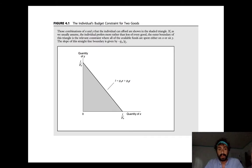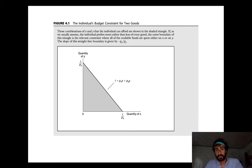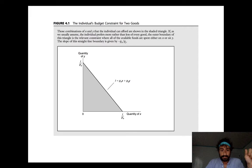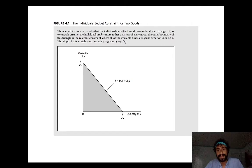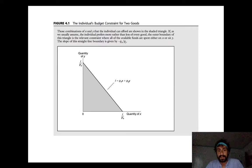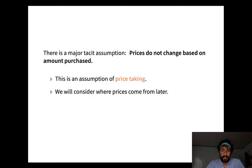Given constant prices, here's what a budget set looks like. On the y-axis, you can buy I divided by p_y worth of y if that's all you buy. On the x-axis, you can buy I divided by p_x of x if that's all you buy. The budget set is everything on or below the line connecting those two intercepts. The slope of that line is negative p_x divided by p_y.